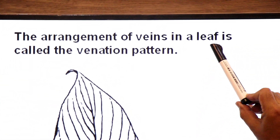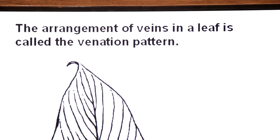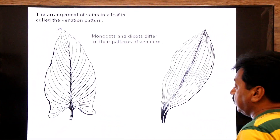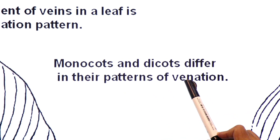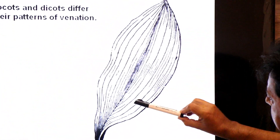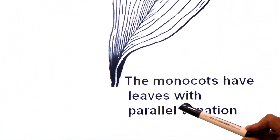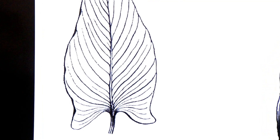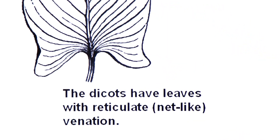The arrangement of veins in a leaf is called venation pattern. Monocots and dicots differ in their pattern of venation. Monocot leaves have parallel venation, while dicot leaves have reticulate (net-like) venation.